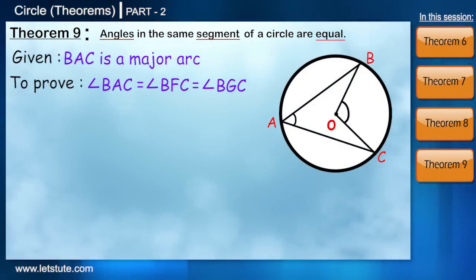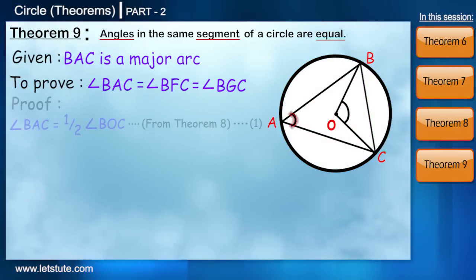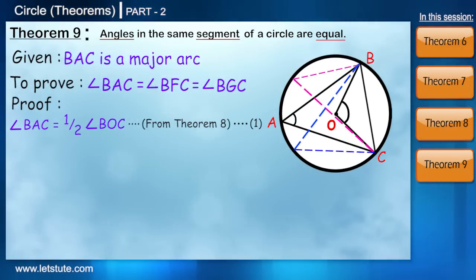If we take the same diagram of our previous theorem and we join BC. BAC is the major arc and because of which BAC is the major segment and BC is the minor arc and minor segment. And we know that angle BAC is equal to half of angle BOC. Now, if you take point A anywhere else on the arc BAC, you will still find the same answer.